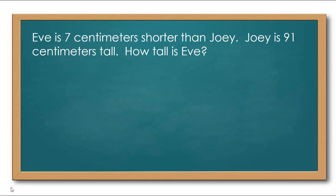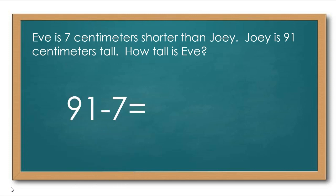Here's our application problem. Remember, you can solve this using whatever strategy you've learned so far. It says: Eve is 7 centimeters shorter than Joey. Joey is 91 centimeters tall. How tall is Eve? Push pause and push play when you're done. You should take 91 minus 7 — did you get 84? That means Eve is 84 centimeters tall. Good job!